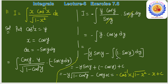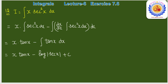Back substitute: sin y = √(1 − cos²y) = √(1−x²), cos y = x, y = cos⁻¹(x)। Final answer: −cos⁻¹(x)·√(1−x²) − x + C। यही question number 11 का answer है।